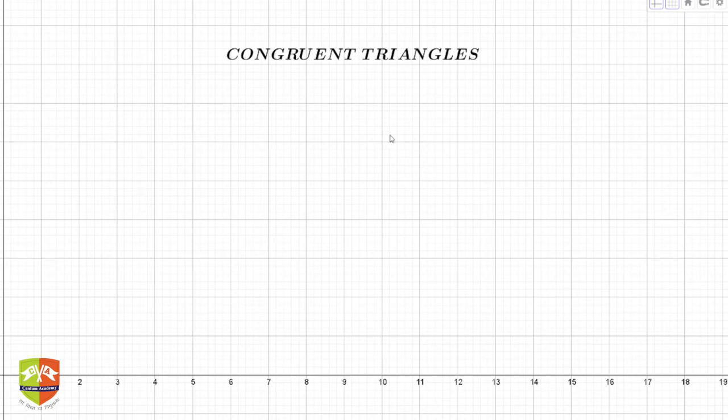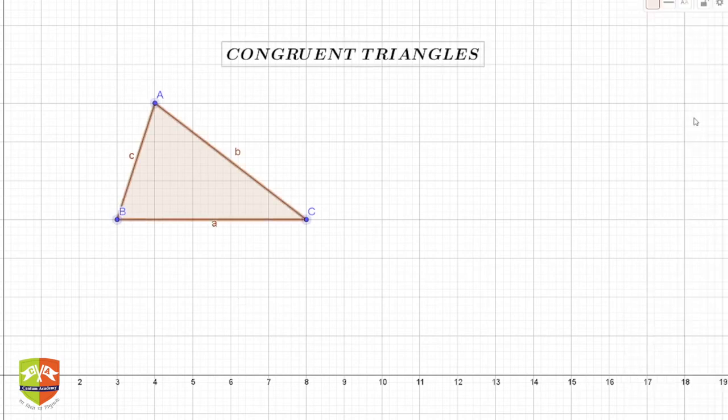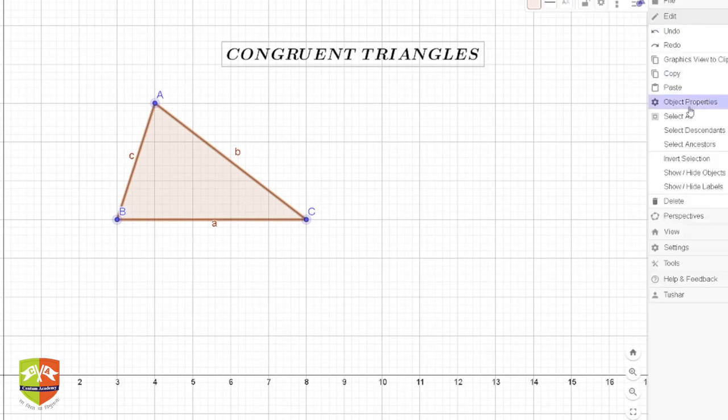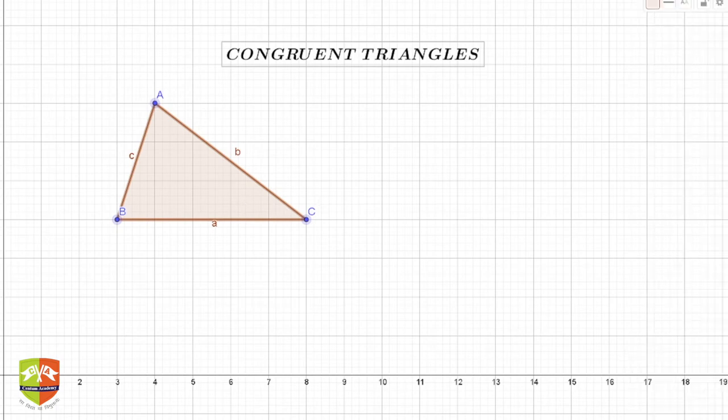Let's first understand what congruent triangles are. Triangles we already know, so let's first draw a triangle. This is a triangle named ABC. Now I'm going to show you how to create a congruent triangle of this one. I'm just going to copy it.